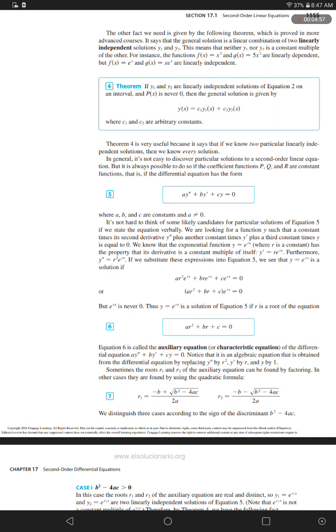Sometimes the roots r sub 1 and r sub 2 of the auxiliary equation can be found by factoring. In other cases, they are found by using the quadratic formula.